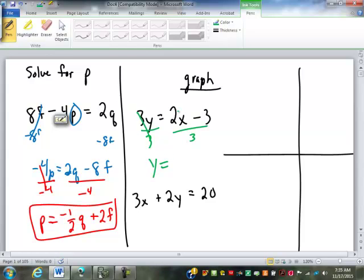So y equals, what's 2x divided by 3? 2 thirds x. Negative 3 divided by 3, minus 1. So now, where do we start to graph it? Negative 1. And from there we go, up 2 over 3. Perfect.